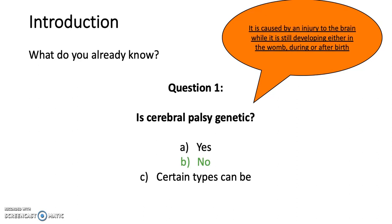It is caused by an injury to the brain while it's still developing. This can either happen in the womb during pregnancy, or it can happen during or shortly after birth.